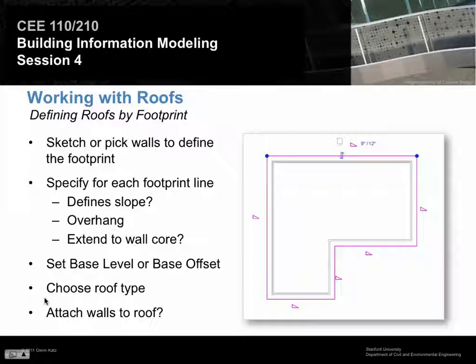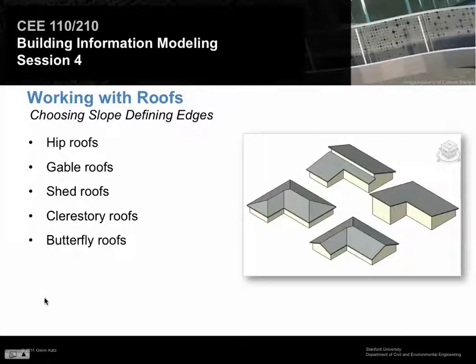The big questions are going to be: specify the footprint lines — will they define a slope? Will they extend into the wall core? We set a base level for the roof, and finally we choose roof type. By using this basic method, we can create all sorts of different roofs. All those roofs are really just the same roof, just with different slope-defining edges turned on. So let's go ahead and play with that a little bit.